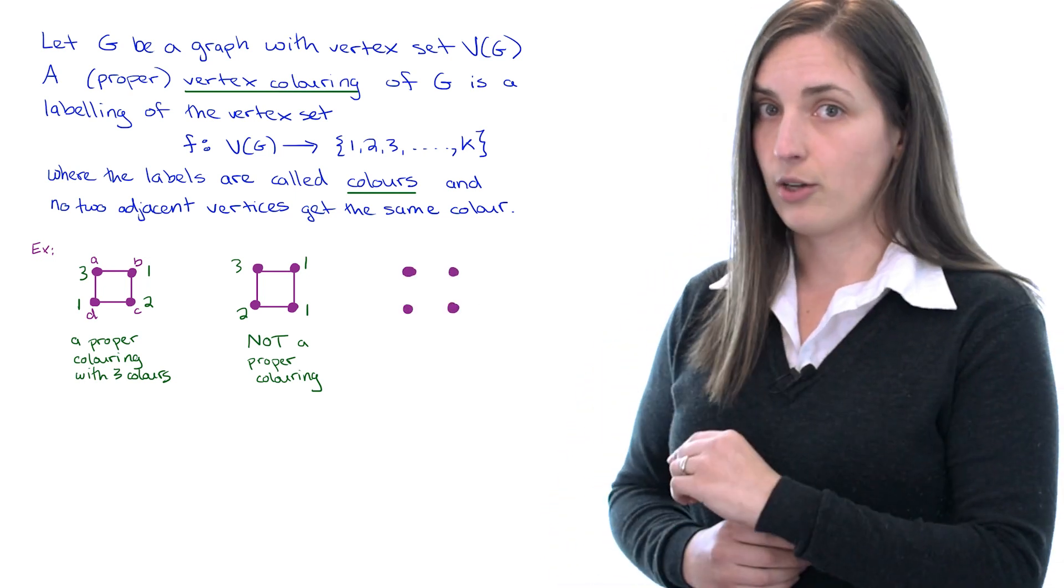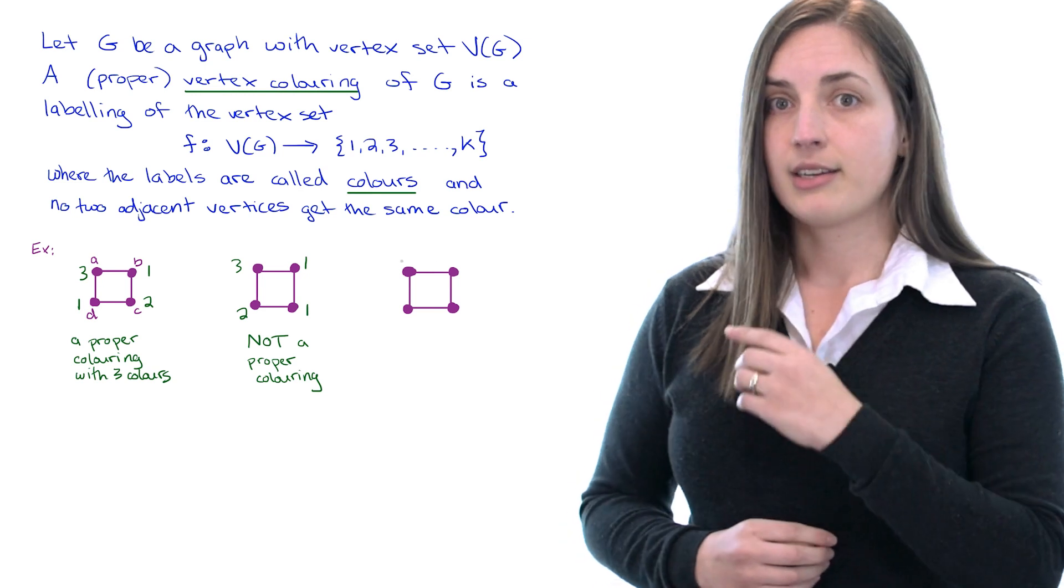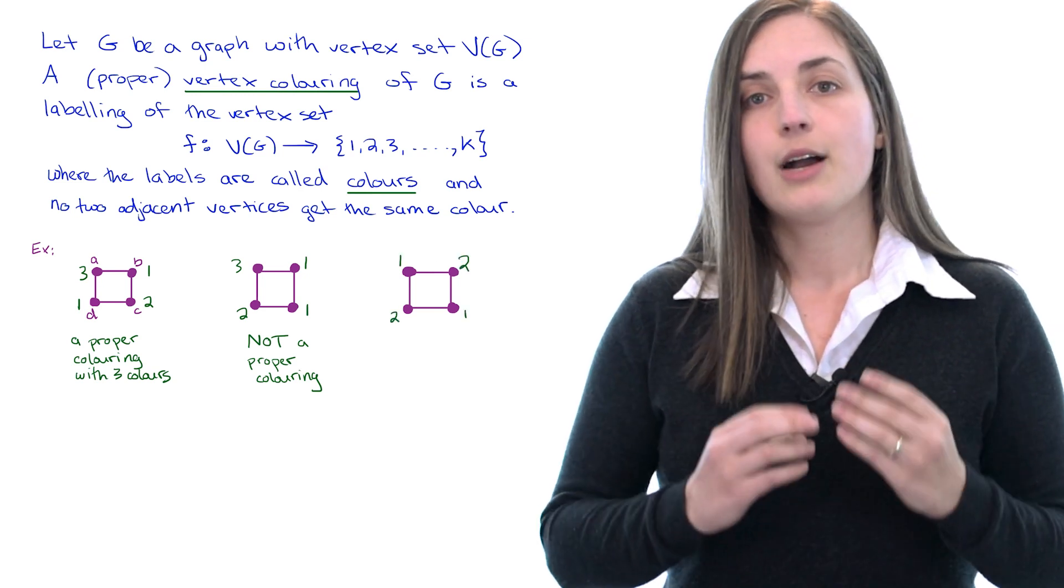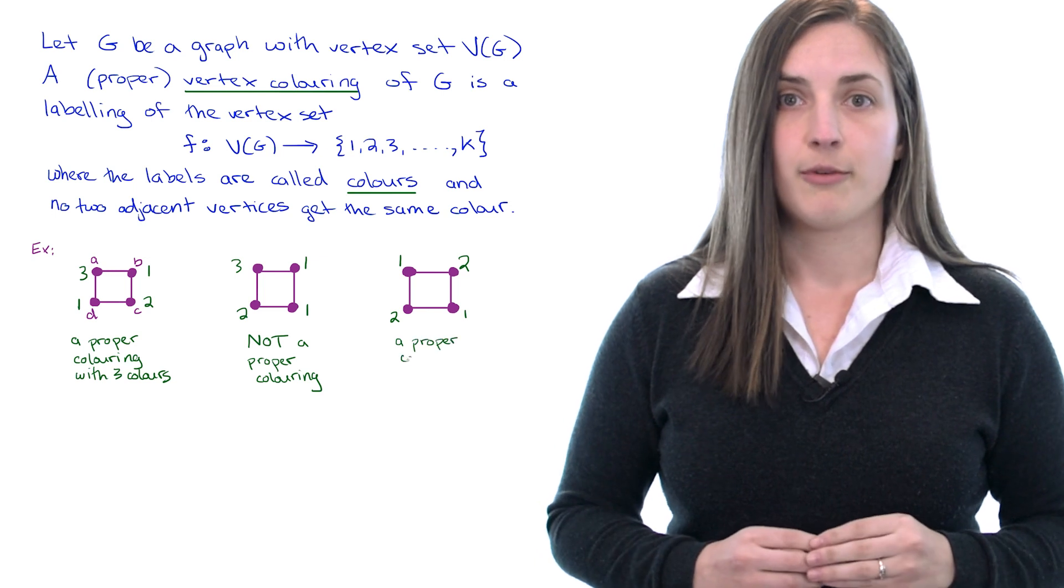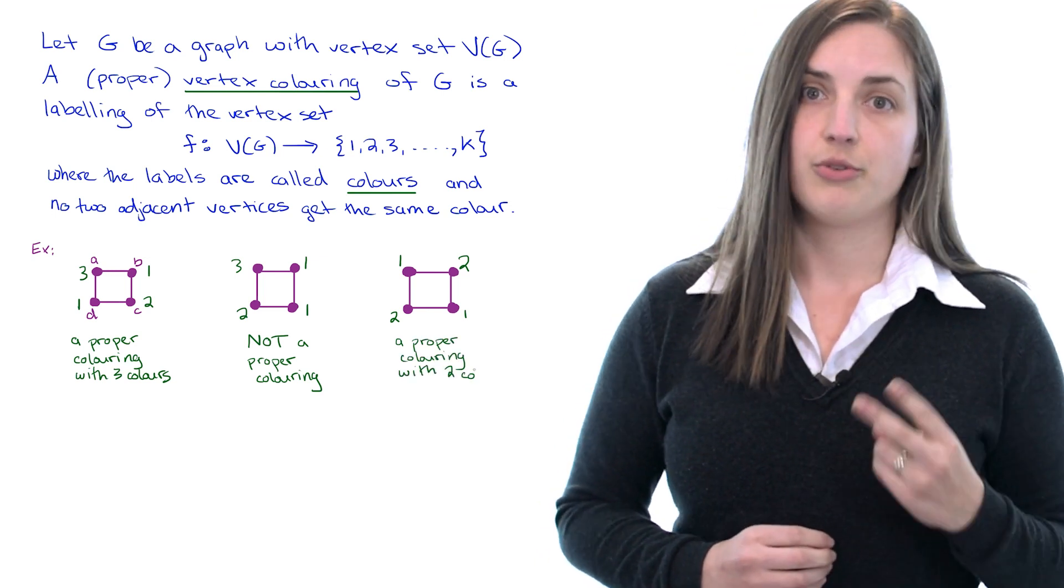So let's draw the four cycle one more time and label it alternating one two one two and now we see that this is also a proper vertex coloring and we've used only two colors.